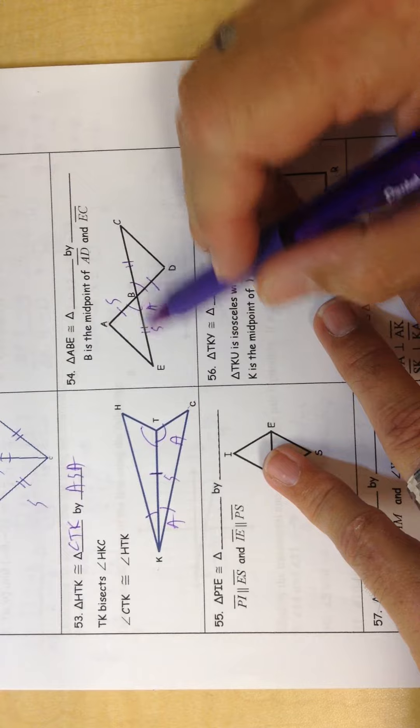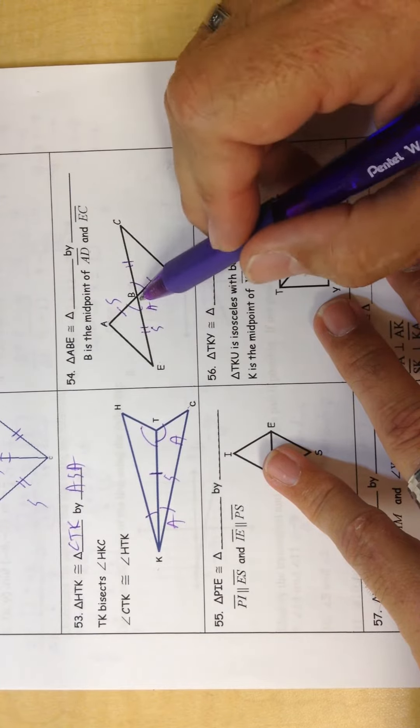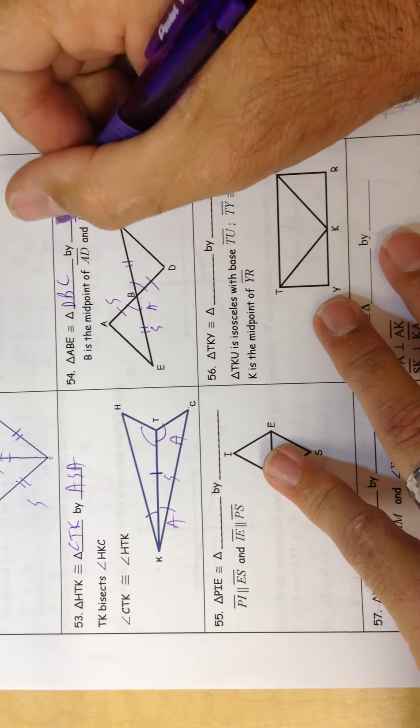So triangle ABE is going to be the same as DBC by side, angle, side.